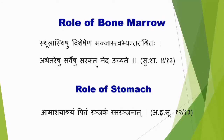Coming to the role of bone marrow — the role of bone marrow has also been explained in Ayurveda. This is again from Sushrita Samhita. The meaning of this verse is: in big bones, the dhatu which is present inside the bones is known as Majja. Majja is present within the large bones.